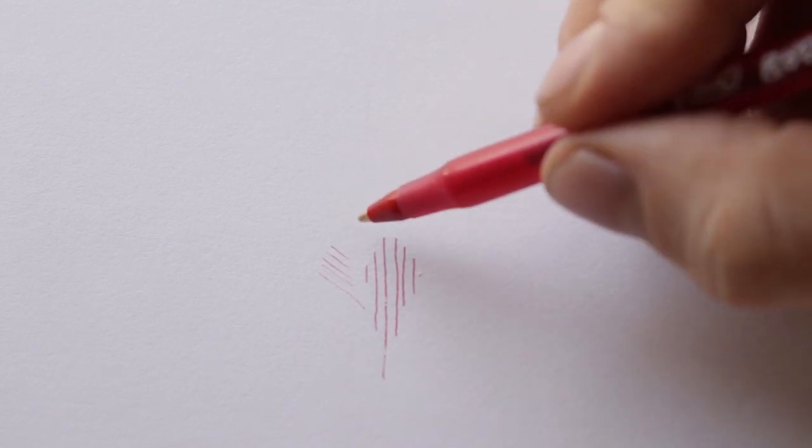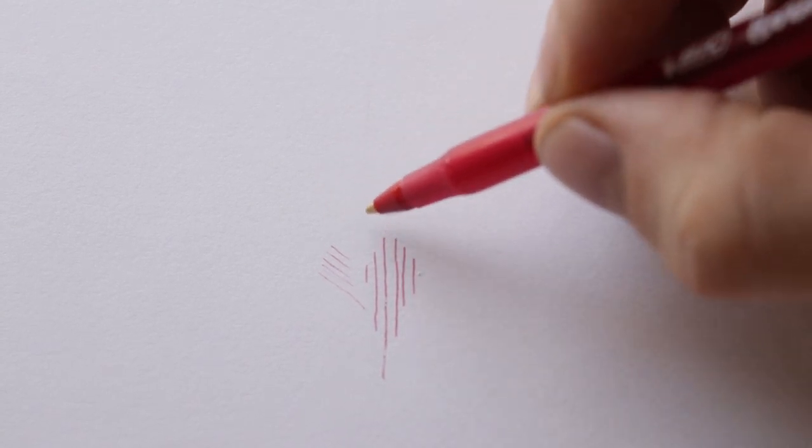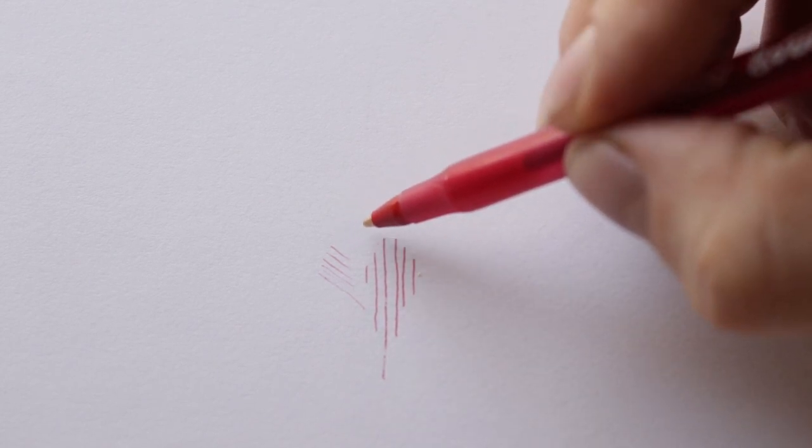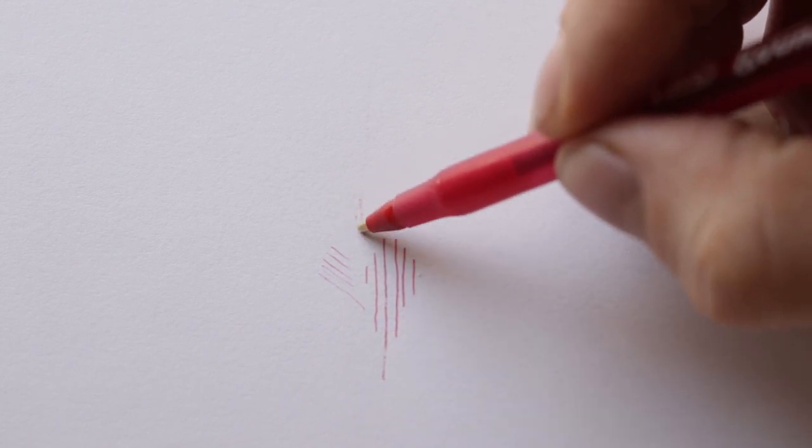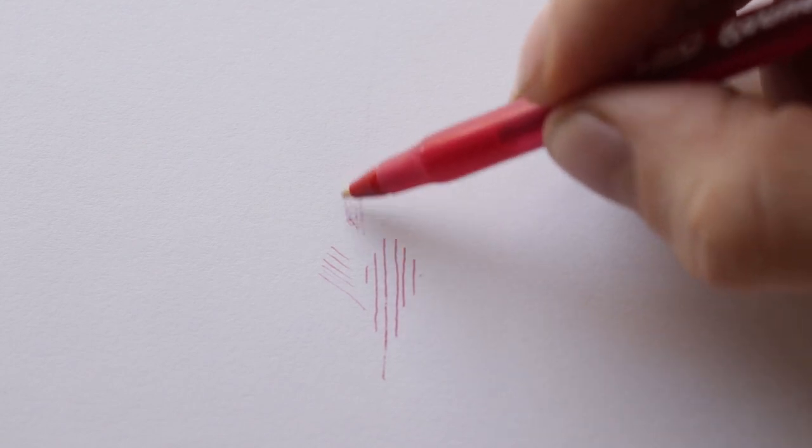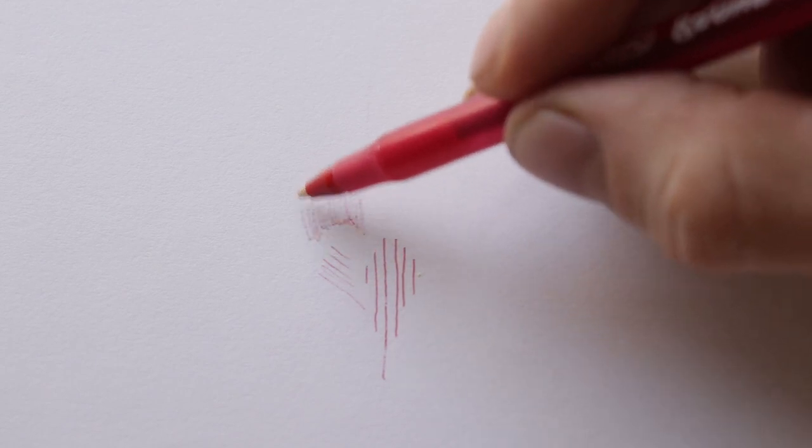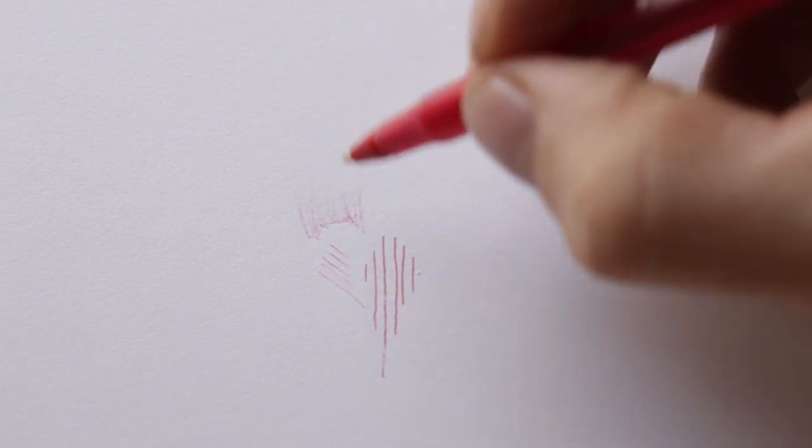So to shade I hold it at an angle like this, I press lightly and I move the pen across the paper. That skipping can give you a shading effect and it's great for drawing portraits or trying to draw things realistically.